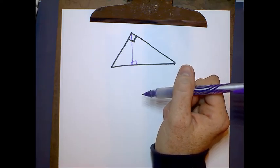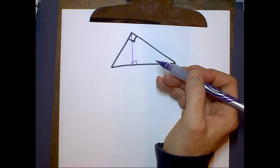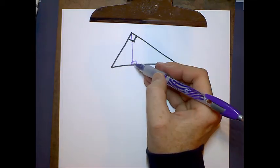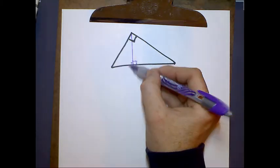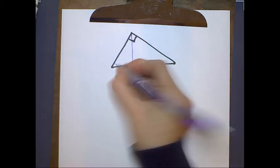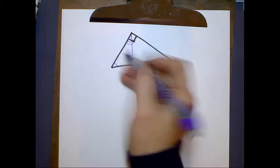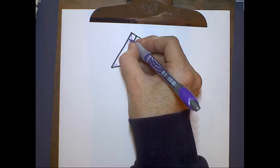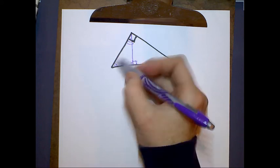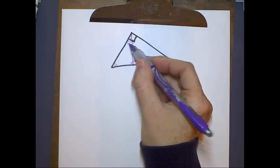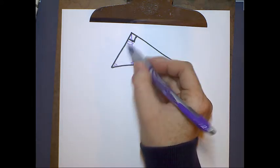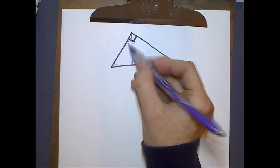And these three right triangles happen to be similar. How do I know that they're similar? Well, let's take a look at the left triangle. Let's call the two acute angles in this left triangle, let's call them basically one and two. We can call them one and two. These two angles are complementary because the acute angles in any right triangle are complementary.